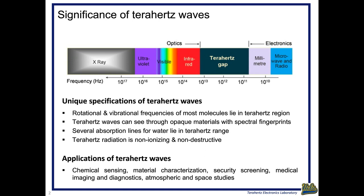The terahertz frequency range is somewhere between optical and radio wave frequency ranges. A lot of optically opaque materials are transparent to terahertz waves, so terahertz waves allow us to see inside visually inaccessible environments. A lot of molecules have very unique spectral signatures at terahertz frequencies, allowing us to remotely identify chemical composition of different media. These are also very low energy radiation compared to X-ray and even optical waves.